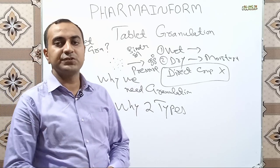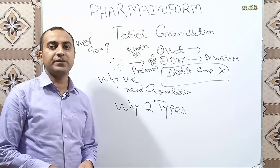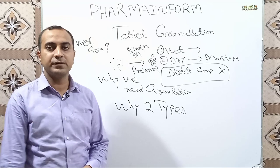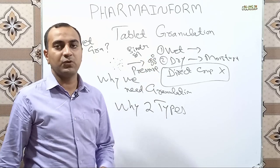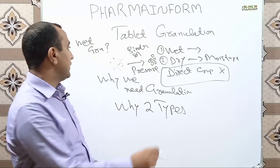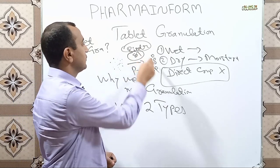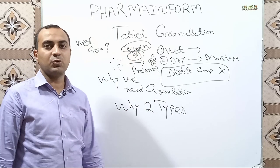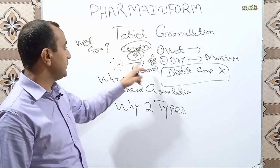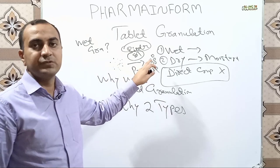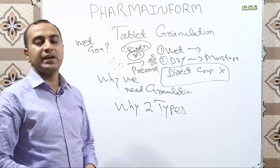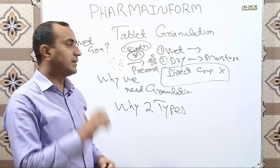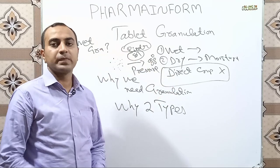Now we will discuss the steps of wet granulation. First, the definition: wet granulation is defined as the process in which we convert fine powder particles into large agglomerates or granules with the help of binder solution and solvent. In wet granulation we use binder solution or solvent to convert powder particles into granules.